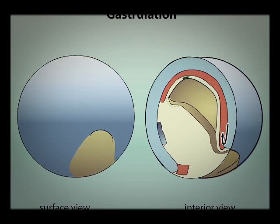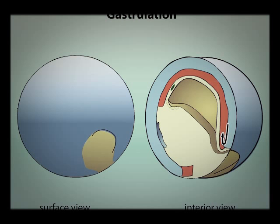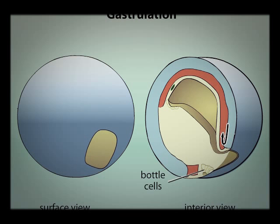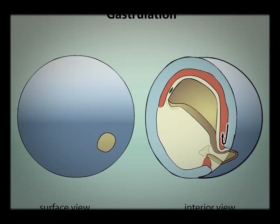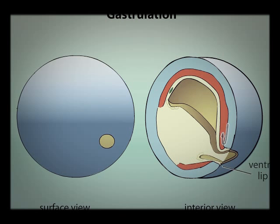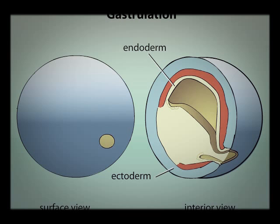As the ectoderm extends around the embryo, another set of bottle cells forms. These cells migrate into the embryo and other surface cells follow them, creating the ventral lip of the blastopore. By the end of gastrulation, the ectoderm has surrounded the embryo, endoderm lines the inside, and mesoderm lies between the two.